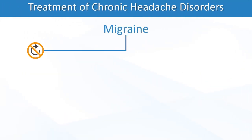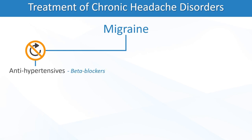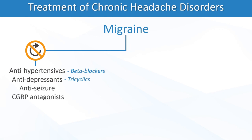Chronic migraine prevention consists of different medication classes, including antihypertensives such as beta blockers, antidepressants such as tricyclics, anti-seizure medications, and calcitonin gene-related peptide (CGRP) antagonists such as atogepant.